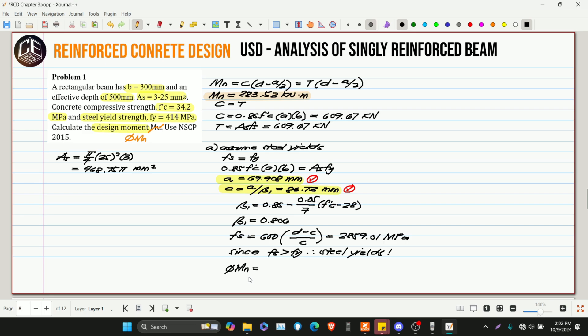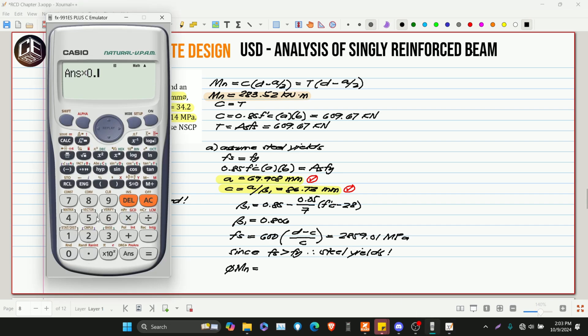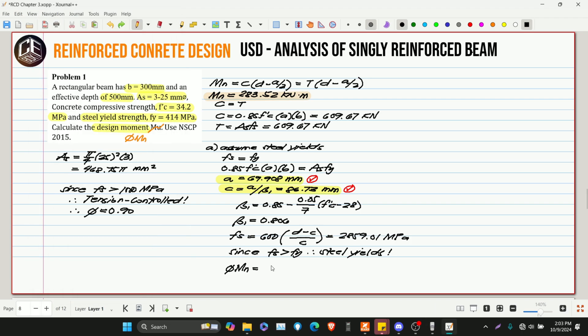So, para sa design moment, phi Mn, kailangan natin ma-solve, or yes, kailangan natin malaman kung ano yung reduction factor. Based on our FS. Ang FS natin is 2859.01. So, since ang ating FS is nag-greater than sa 1,000 MPa, which is the stress under sa strain na 0.005, therefore, under tayo ng tension controlled. Kaya, yung ating reduction factor ng phi is equivalent to 0.90. So, 283.52 times 0.90. So, 255.17 kilo Newton meter. So, this is our design moment.